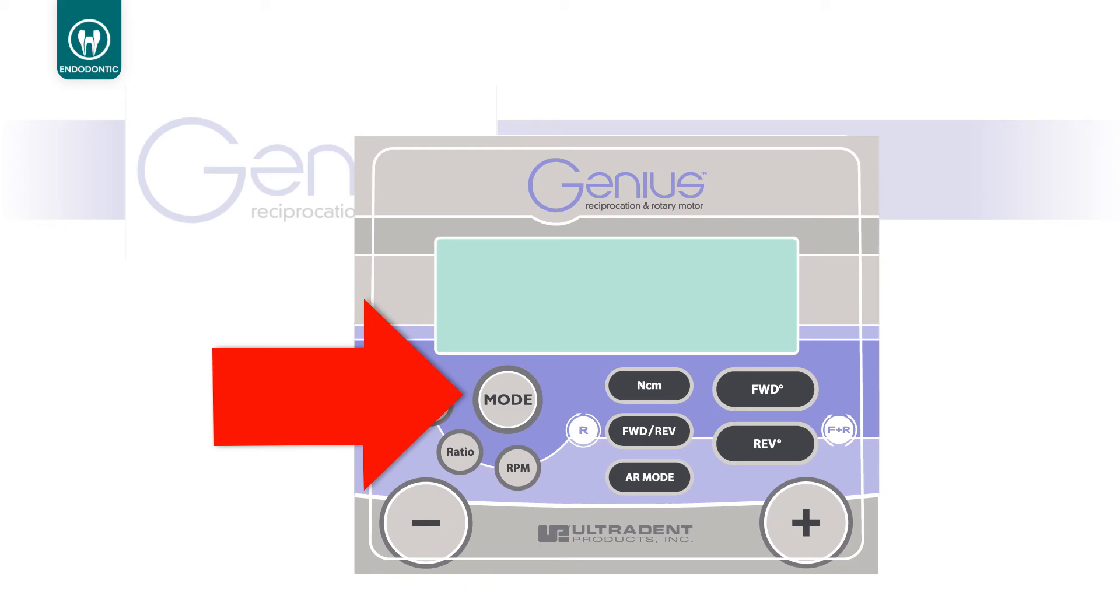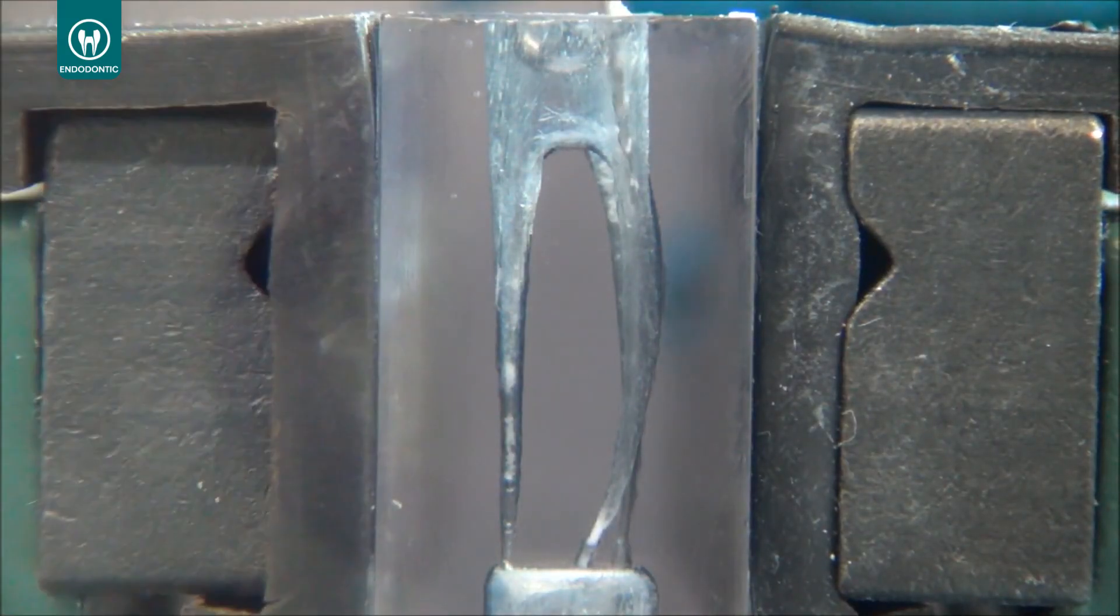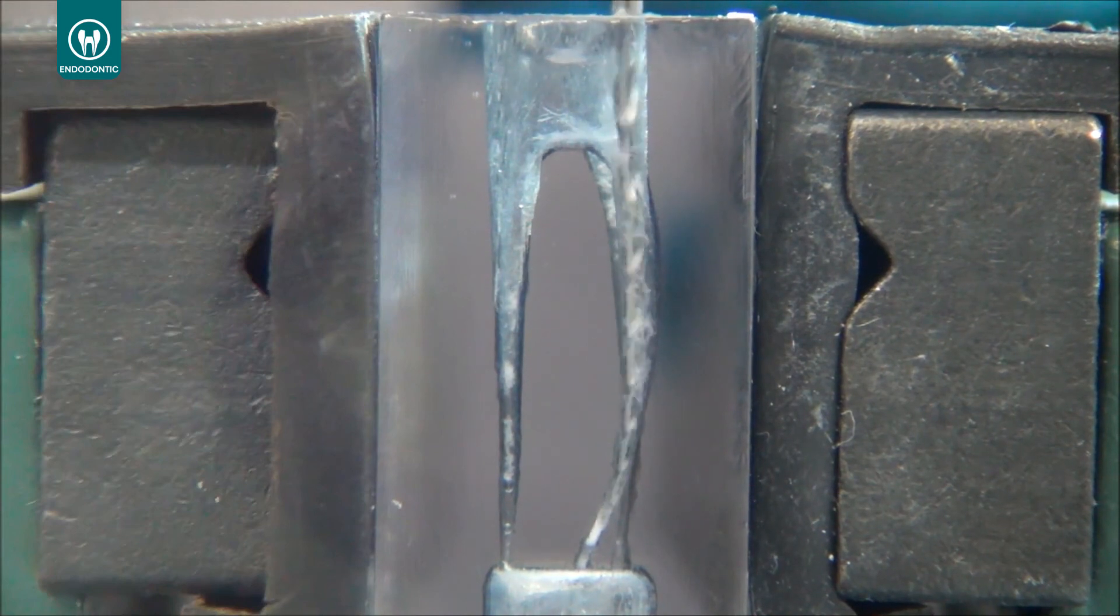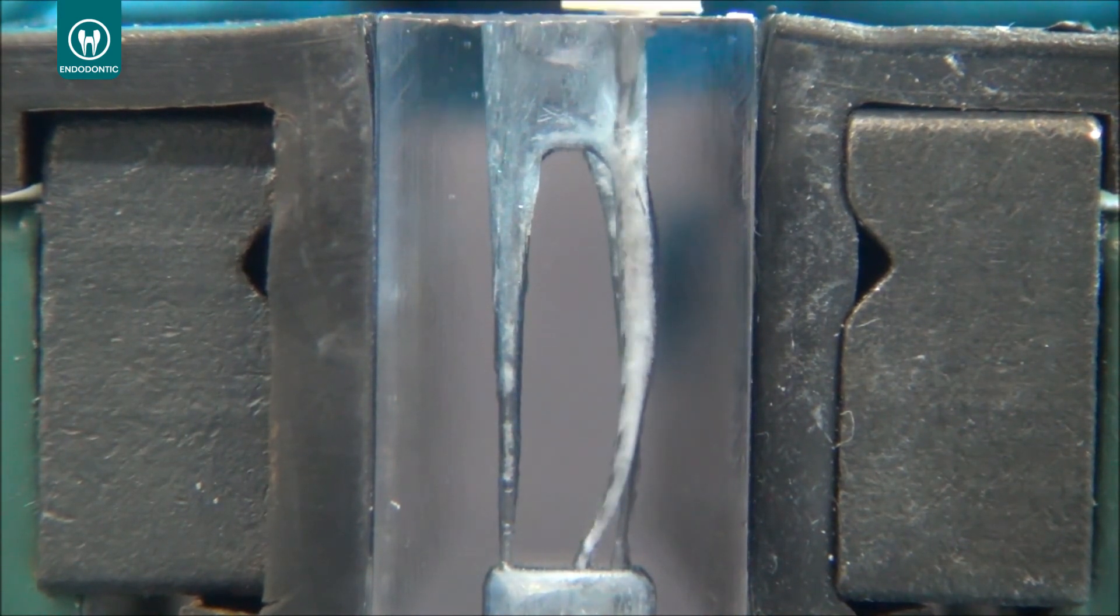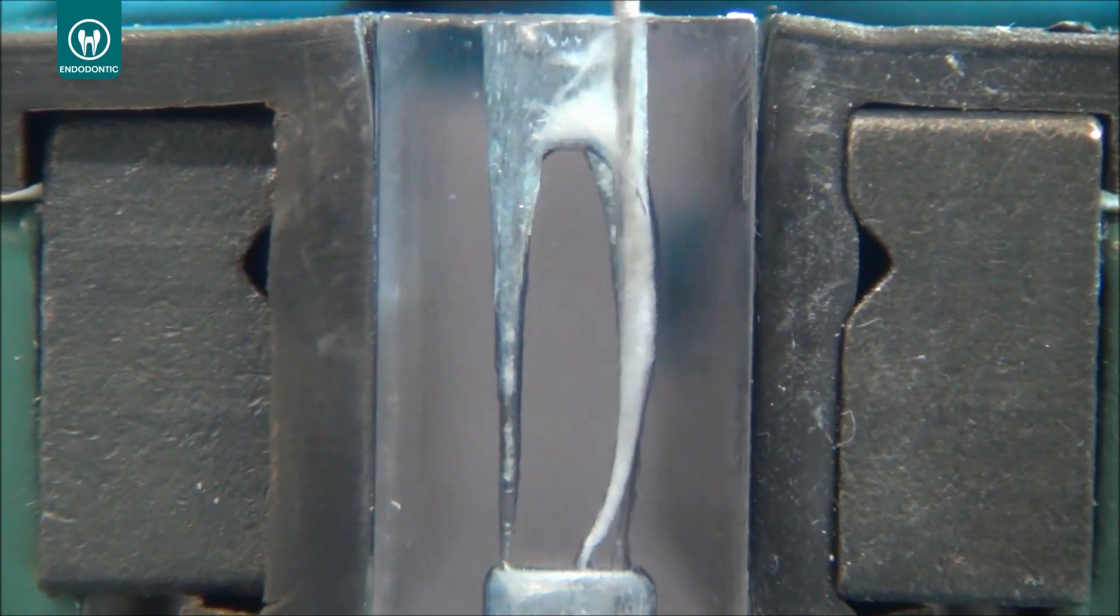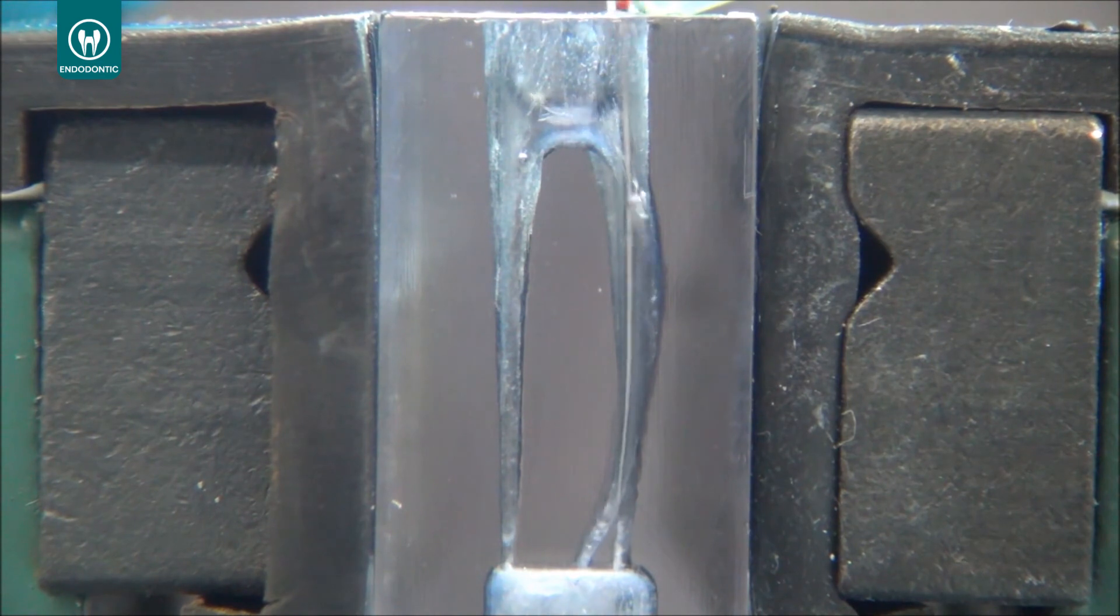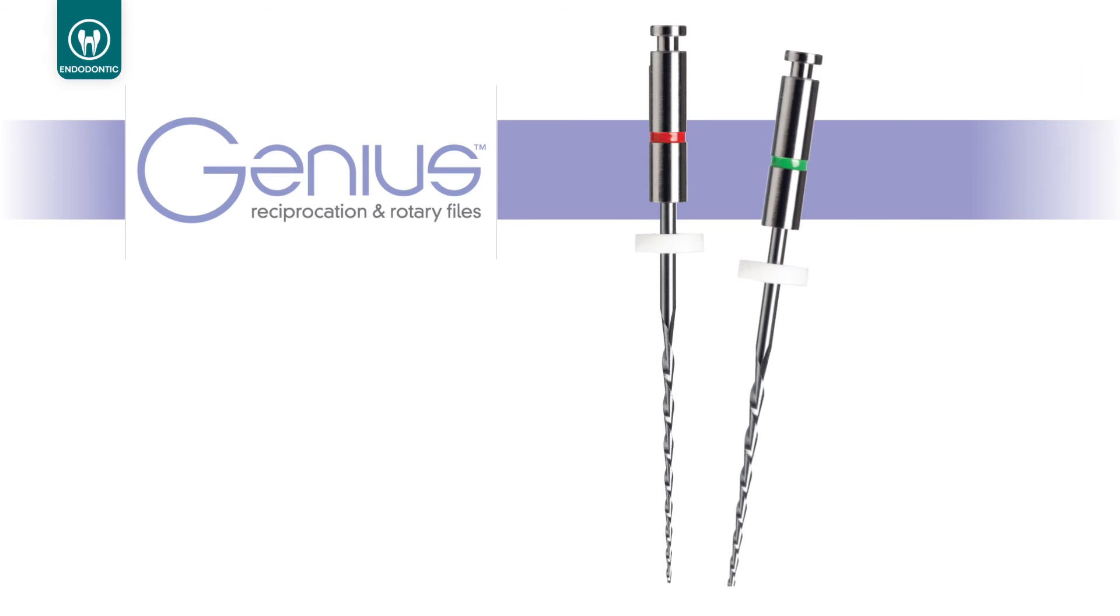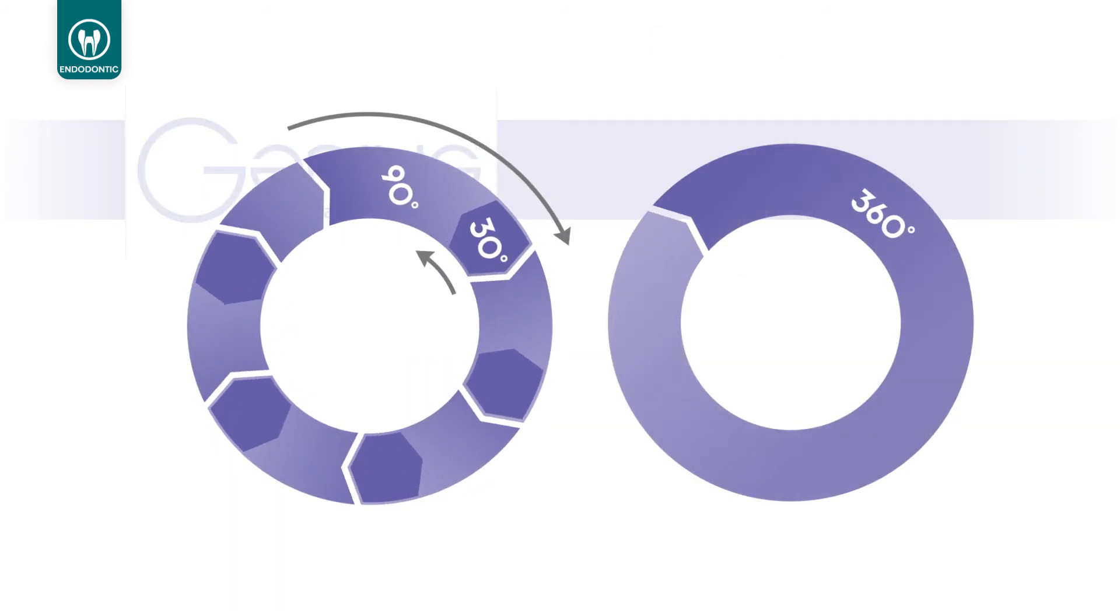After using the 3504 in reciprocation, when you get the point that you are at the working length, then you go to your genius motor, press the mode button from reciprocation to rotation, insert the file inside the canal in rotation, and then you'll be able to remove all debris from inside the canal. It's very important to point out the fact that in rotation you can remove more debris than using just reciprocation. That's exactly the reason that we are finishing the job with rotation. So as you can see, it's easy to do all the instrumentation with two files after pre-flaring and in a very safe way doing reciprocation first and efficiently removing debris in rotation.